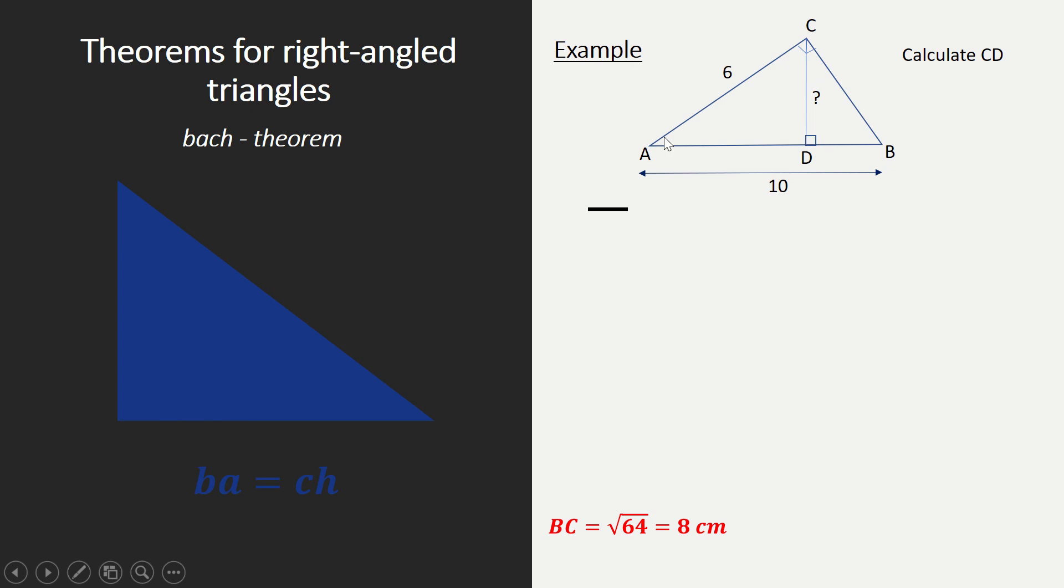So maybe we can use it for this right-angle triangle. Again, we do not know what CD is, we do know what AC is, but we have absolutely no idea what AD is. The only thing we know is that AB is 10. So therefore, we miss some information and we cannot use a Pythagorean theorem for this.